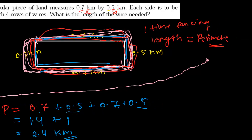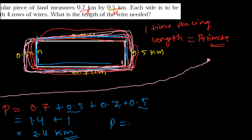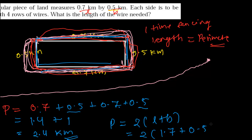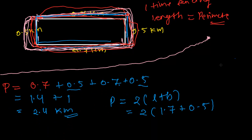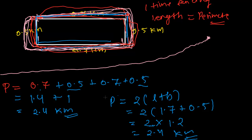You can also find the perimeter quickly using the formula: perimeter of a rectangle is 2 times the sum of length and breadth. That is 2 times (0.7 plus 0.5), which equals 2 times 1.2, giving you 2.4 kilometers directly.